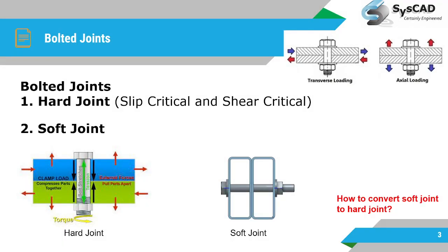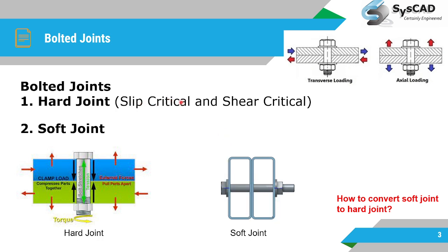In bolted joints we have two types of joints: one is hard joint and another one is soft joint. In the hard joint we have slip critical and shear critical joints. In slip critical joints, if there is any relative motion between two parts connected using bolts, the slip will happen and we say the joint has failed. In shear critical joints, if slip happens the bolts can still take the shear load, and the joint is considered failed only if the bolts fail in shear.